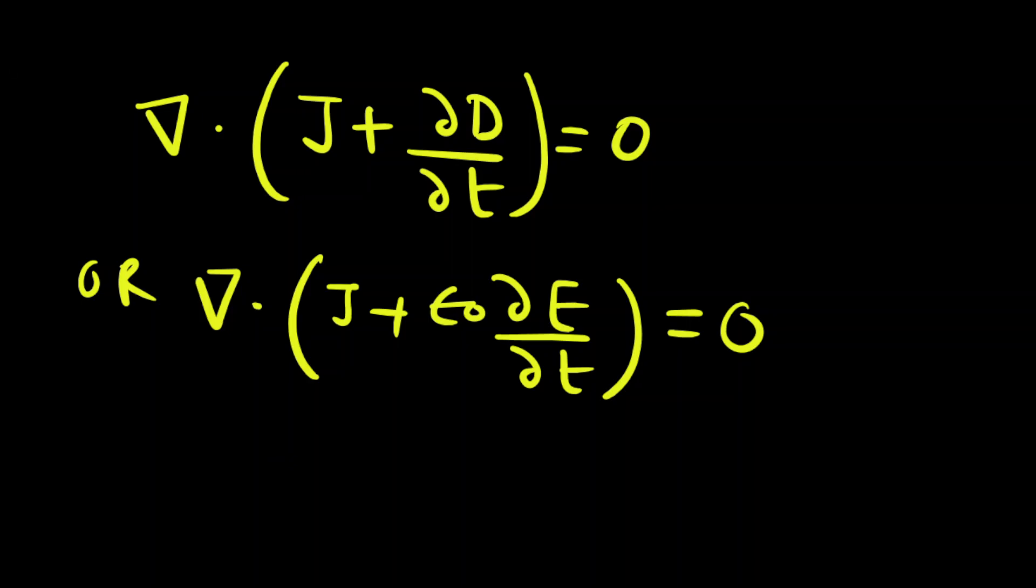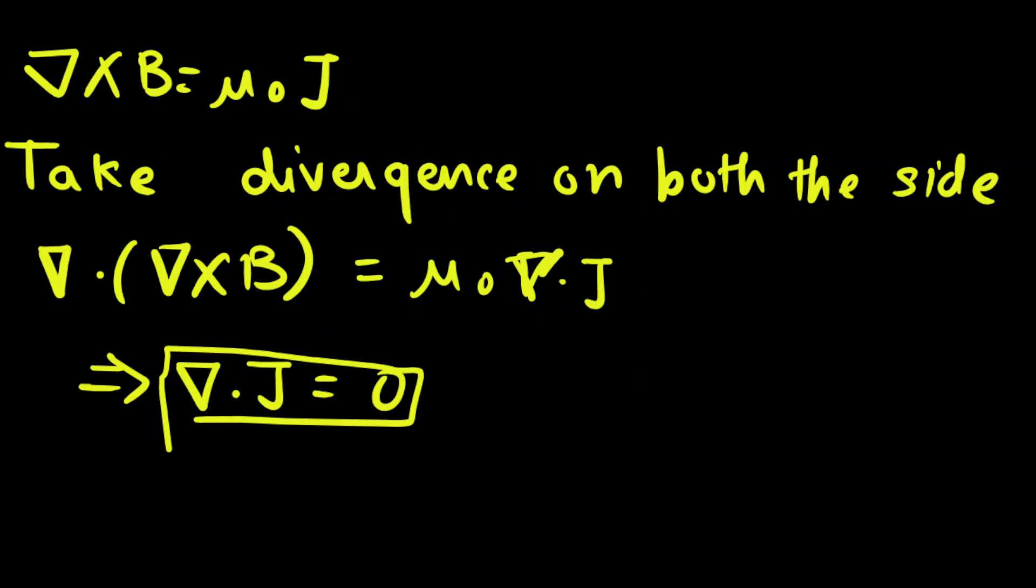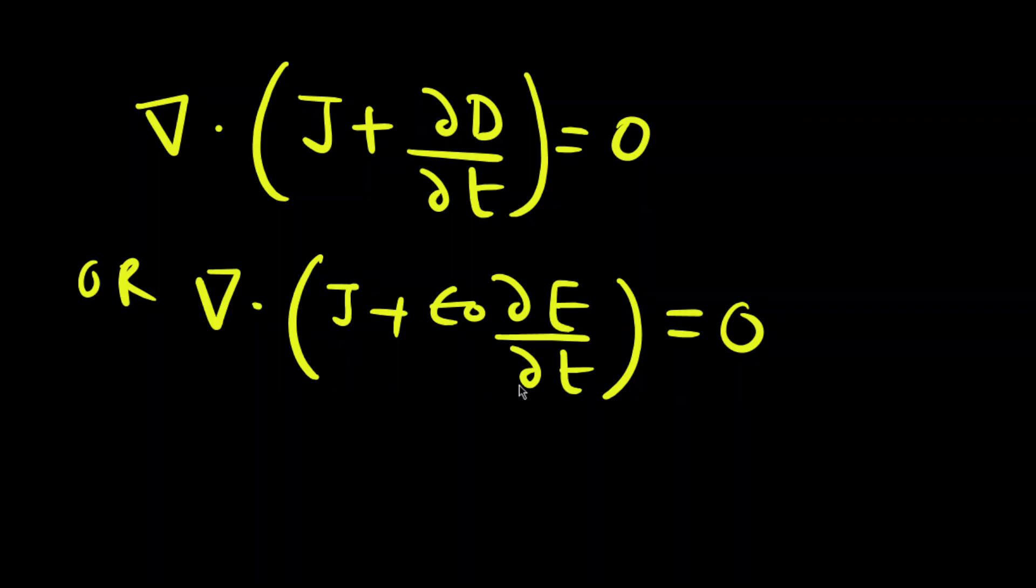So here also we got that same analogy. Instead of J, Maxwell replaced that J with J + ε₀∂E/∂t, or J + ∂D/∂t.